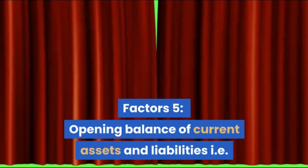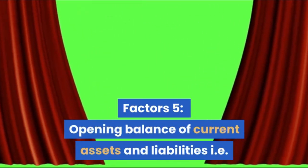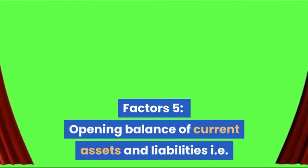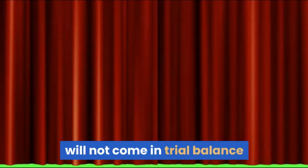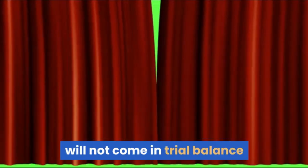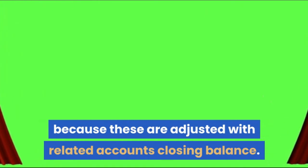Factor 5: Opening balances of current assets and liabilities — i.e., cash in hand, bank balance, debtors, creditors, etc. — will not come in the trial balance because these are adjusted with the related account's closing balance.